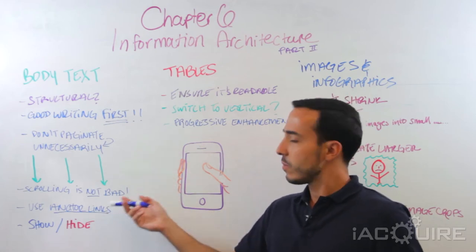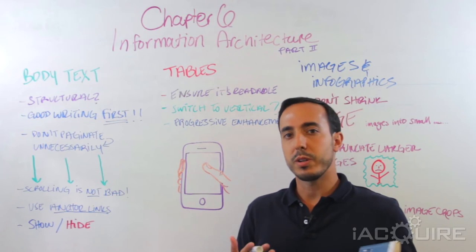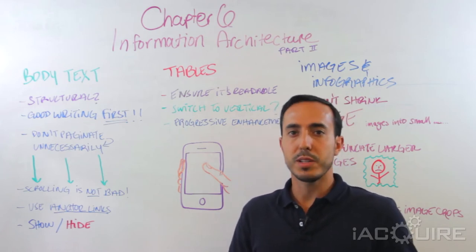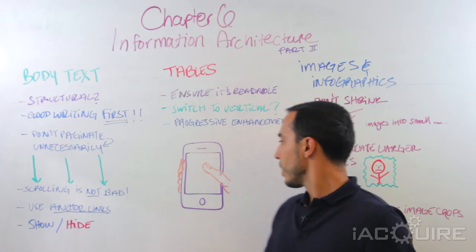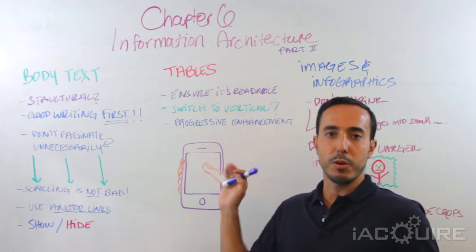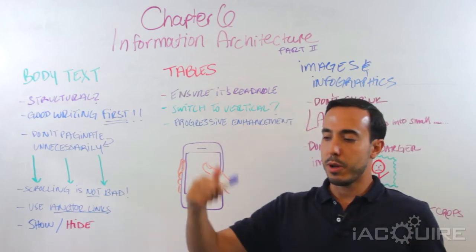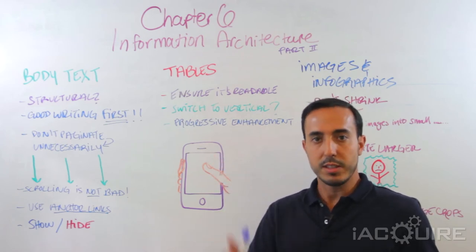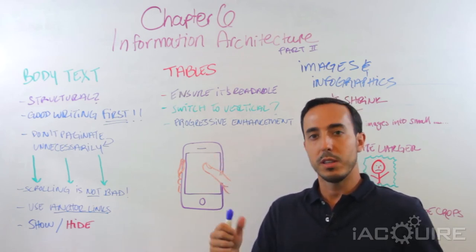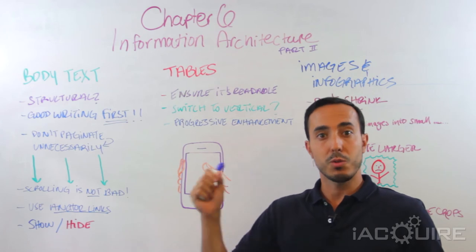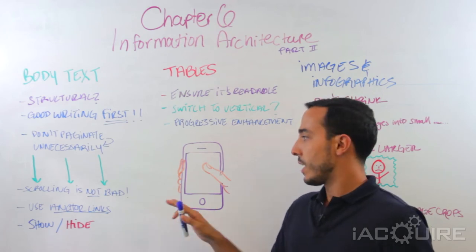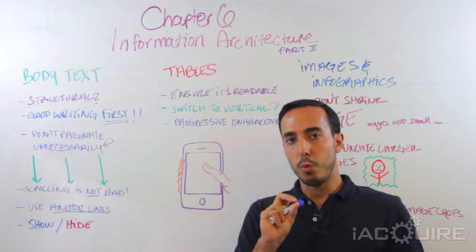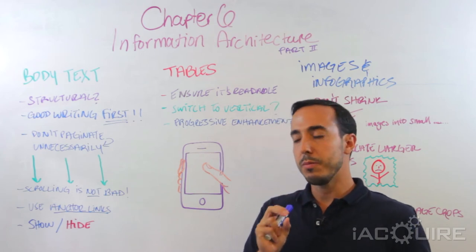Scrolling is not necessarily a bad thing. There's this weird myth that people don't like to scroll, but people are perfectly fine scrolling, especially mobile visitors. You see the guy here with the mobile phone using his thumb to swipe up and down — it's perfectly normal. Let people read the entire article; it doesn't matter if it's a little long, they can swipe to scroll through the article if they need to.